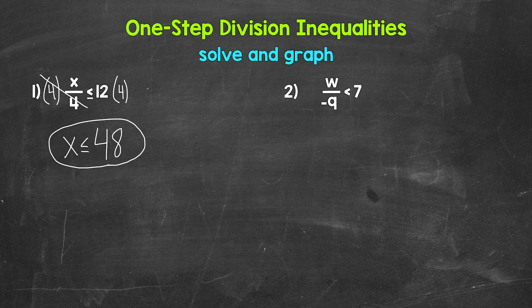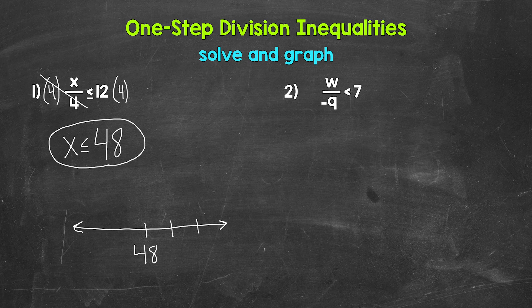So any value less than or equal to 48 is a solution of this inequality — it will make it true. Now we're ready to graph this. We can start with a number line and put 48 in the middle, with a couple of numbers on both sides: 46, 47, 48, 49, 50.